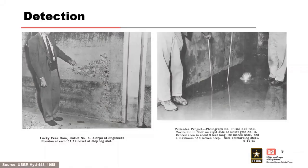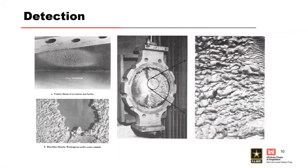Detection: the big difference with cavitation is it can be misdiagnosed because we have abrasion on a lot of our hydraulic structures and they can look kind of similar. But abrasion is smooth and cavitation is rough — it's all these jackhammers basically attacking the structure. This is showing a valve where you can see that it's pretty serrated.